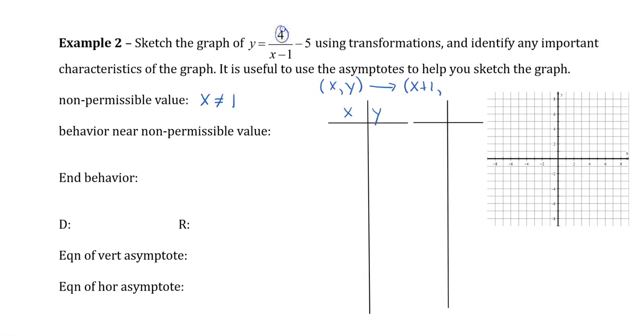The 4 and the negative 5 affect our y value, so this means it's going to be 4 times the y value, and then we have the minus 5.